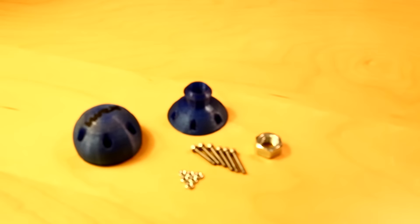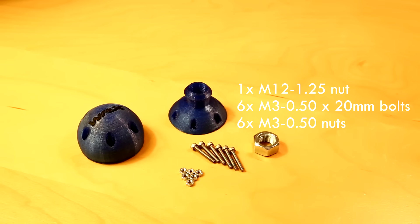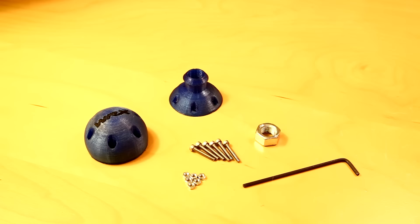After everything is done printing, you need to assemble it. Here is everything you need: an M12x1.25 nut for the shift knob, 6 M3x20mm bolts, and 6 M3 nuts.